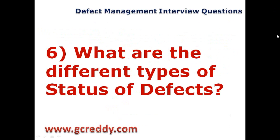What are the different types of status of defects? First, New Status — the tester provides new status while reporting the defect for the first time. Next, Open Status — the developer opens the defect. Next, Rejected — the developer or dev team rejects the defect if it is invalid or duplicate.